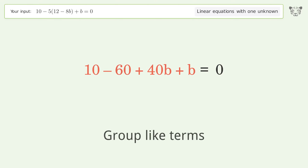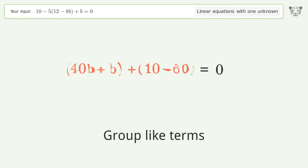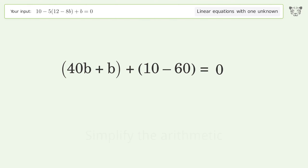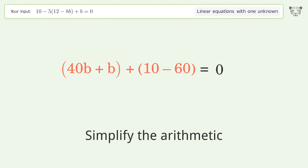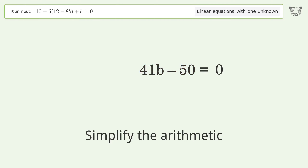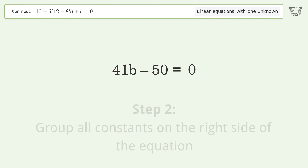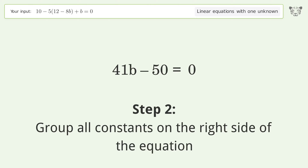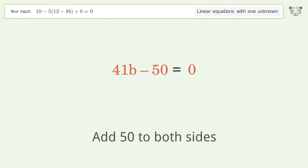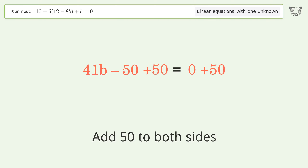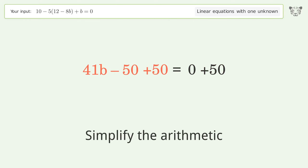Group like terms and simplify the arithmetic. Then group all constants on the right side of the equation by adding 50 to both sides, and simplify the arithmetic.